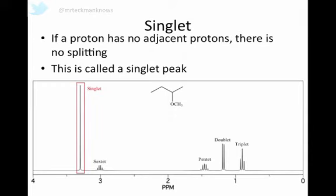If a proton has no adjacent protons, there is no splitting. This is called a singlet peak, it's just a single peak on its own. So in this molecule, this proton here, these three protons here, have no adjacent protons. There are no carbons near them. So there's only going to be one peak for them.